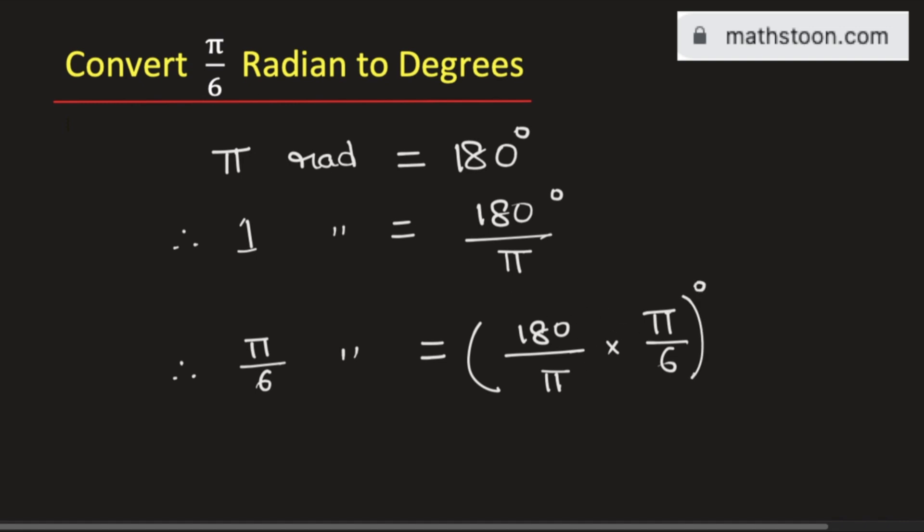Now we will simplify it. See that the π's get cancelled. And if we divide 180 by 6, we get 3.